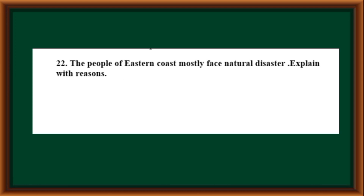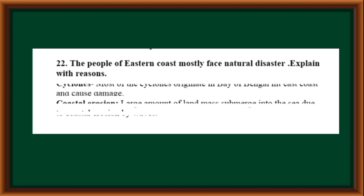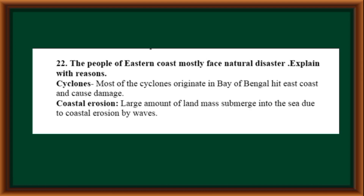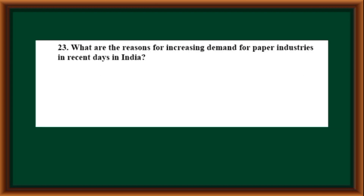The people of the eastern coast mostly face natural disasters — explain with reasons. Cyclones: most cyclones originate in the Bay of Bengal, hit the east coast, and cause damage. Coastal erosion: a large amount of land mass submerges into the sea due to coastal erosion by waves.